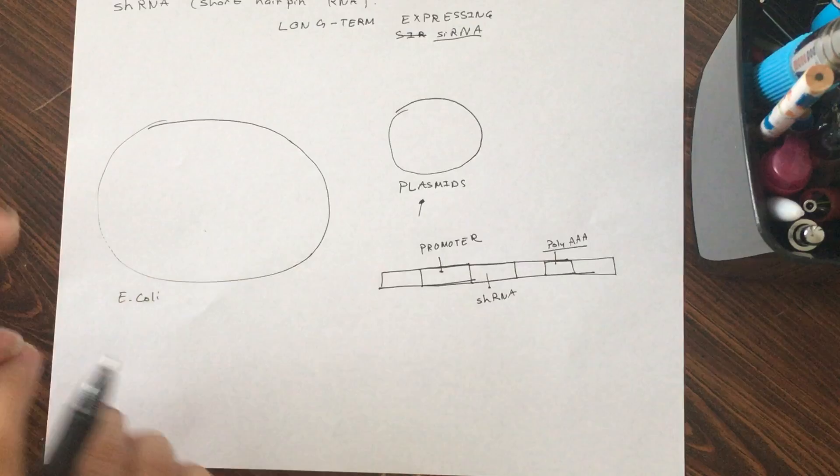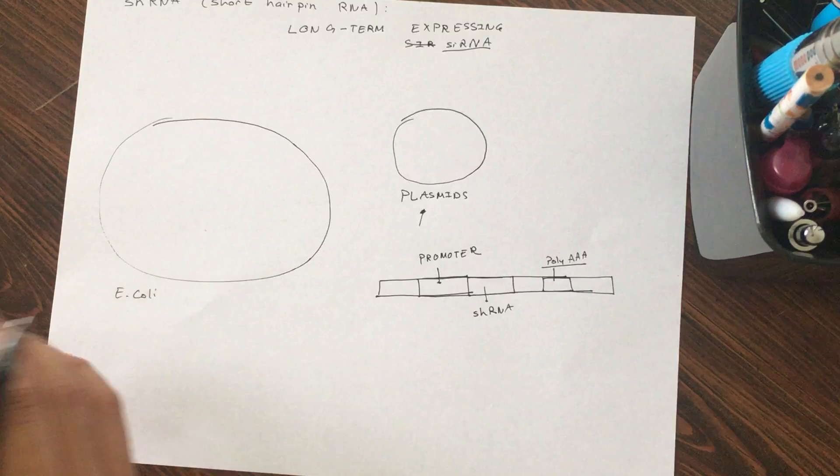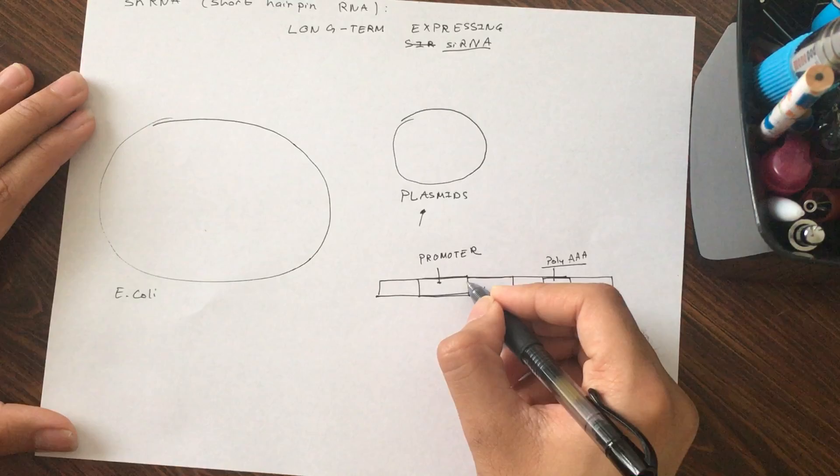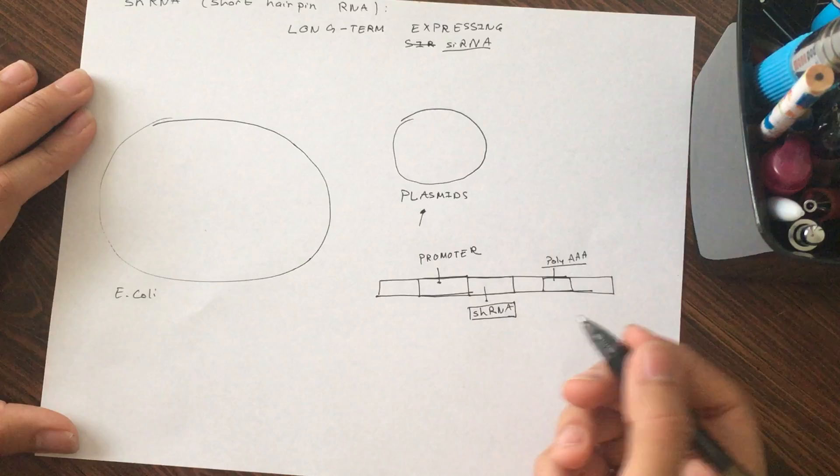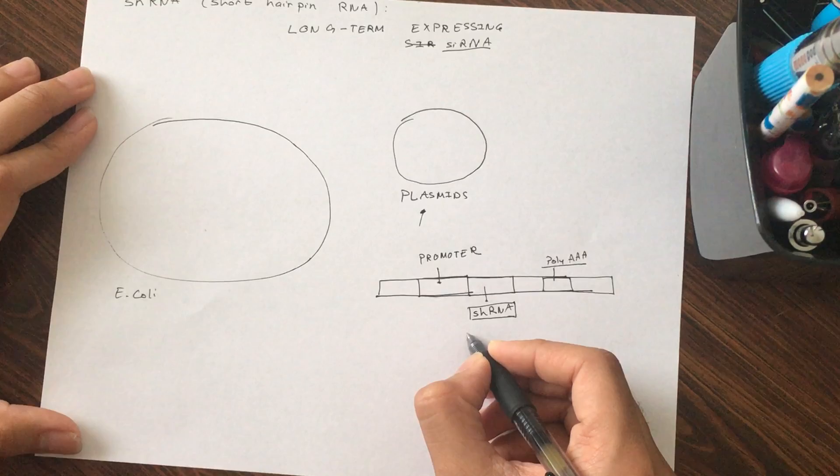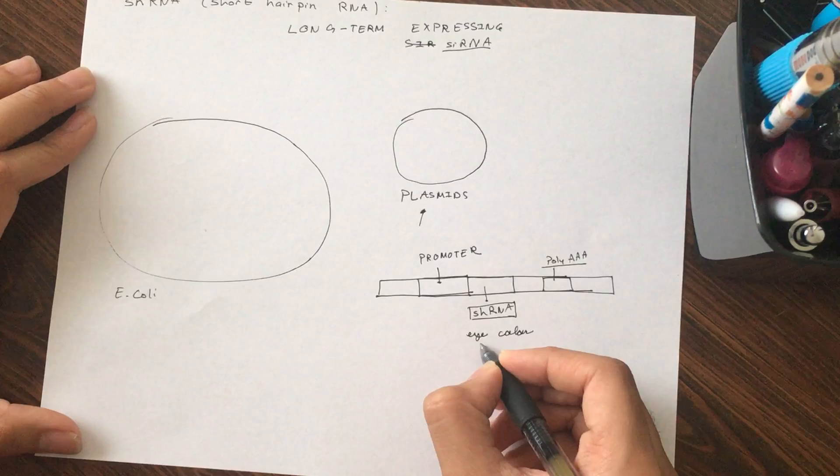And this is just because RNA molecules usually have poly-A tails at the end. So suppose you have this plasmid that you're making. Polymerase will come in, it will transcribe everything, and we specifically want this shRNA. Suppose this is what's going to cleave a protein that codes for eye color.